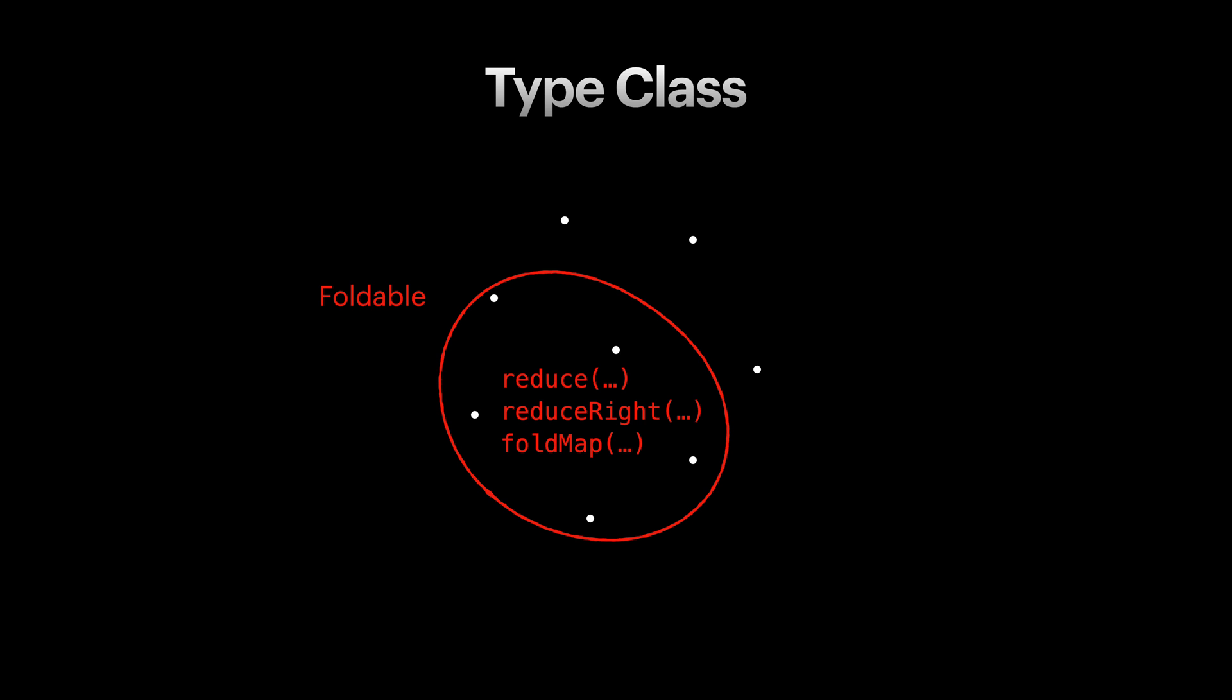Foldable is another structure that lets us fold or reduce a structure to something else. You are already familiar with array reduce method. Foldable is the essence and abstraction of that concept. Reduce and reduce right functions are also called fold left and fold right in different libraries and languages. Again, we will look into this later.